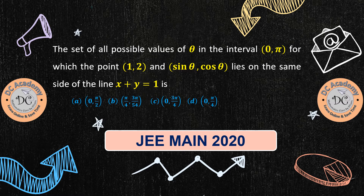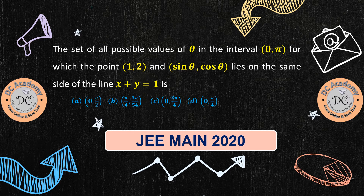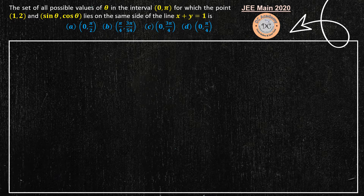Hi, in this video we're going to solve a particular problem which appeared in JEE Main 2020. The problem statement says that we need to find the set of all possible values of theta in the interval 0 to pi for which the points (1, 2) and (sin theta, cos theta) lie on the same side of the line x plus y equal to 1.